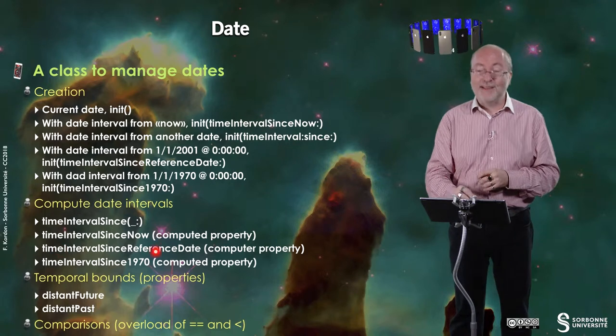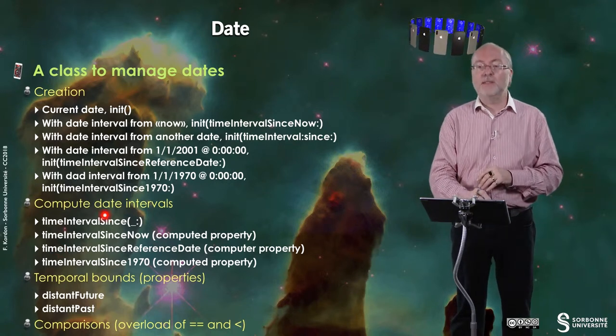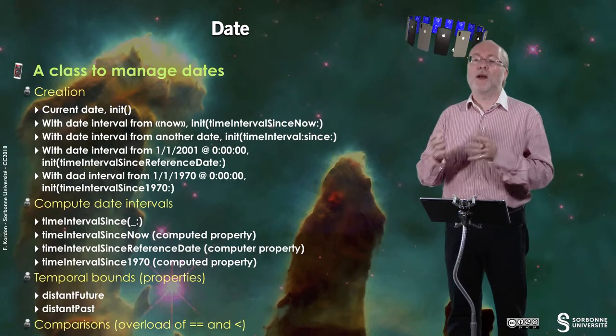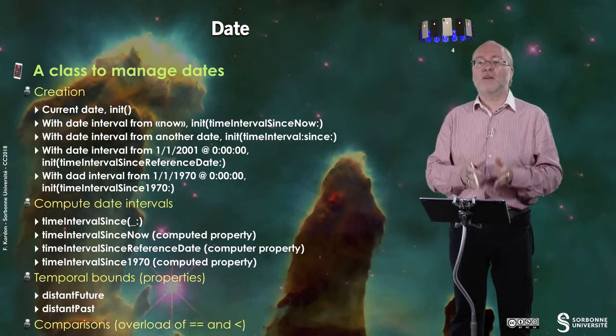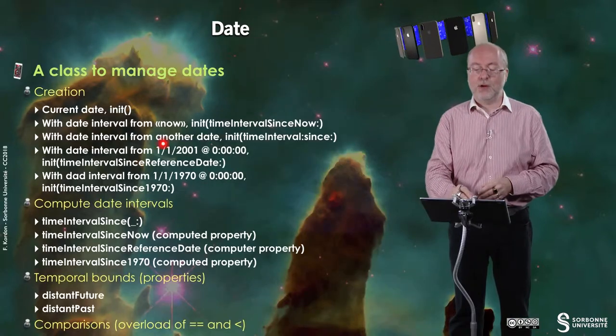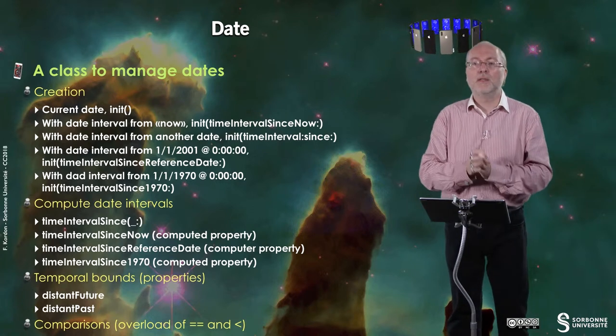You can also compute date intervals, so the difference between two dates. Time interval since now and a given date. Time interval since now, which is a computed property. Time interval since the reference date. Time interval since 1970. So, it means that you are 1st of January, etc. Either in 2001 or in 1970.